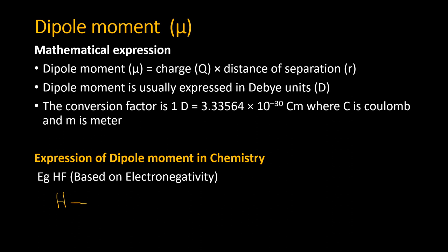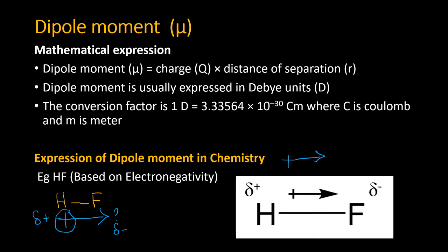The direction of the arrow indicates the direction of electron density. For HF, the electron density is more toward fluorine, so the dipole moment arrow points from H to F. Hydrogen has a partial positive charge and fluorine has a partial negative charge, and the dipole moment of this molecule is directed toward fluorine.